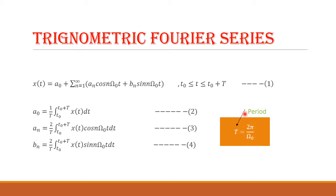The coefficients a₀, aₙ, and bₙ can be calculated using these formulas. a₀ = (1/T) ∫[t₀ to t₀+T] x(t) dt. aₙ = (2/T) ∫[t₀ to t₀+T] x(t) cos(nω₀t) dt.